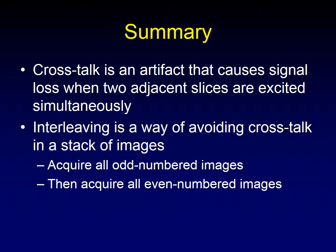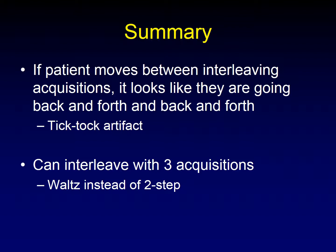In summary: crosstalk is an artifact that causes signal loss when two adjacent slices are excited simultaneously, or two intersecting slices. Interleaving is a way of avoiding crosstalk in a stack of images — you acquire all the odd-numbered images, then go back and acquire all the even-numbered images, so no adjacent slices are excited at the same time. Unfortunately, if a patient moves between those two interleaving acquisitions, it will look on the PACS like they're going back and forth — this is the tick-tock artifact. You can also interleave with more than two acquisitions; with three acquisitions the patient looks like they're doing a waltz instead of a two-step, but the same basic principles apply.